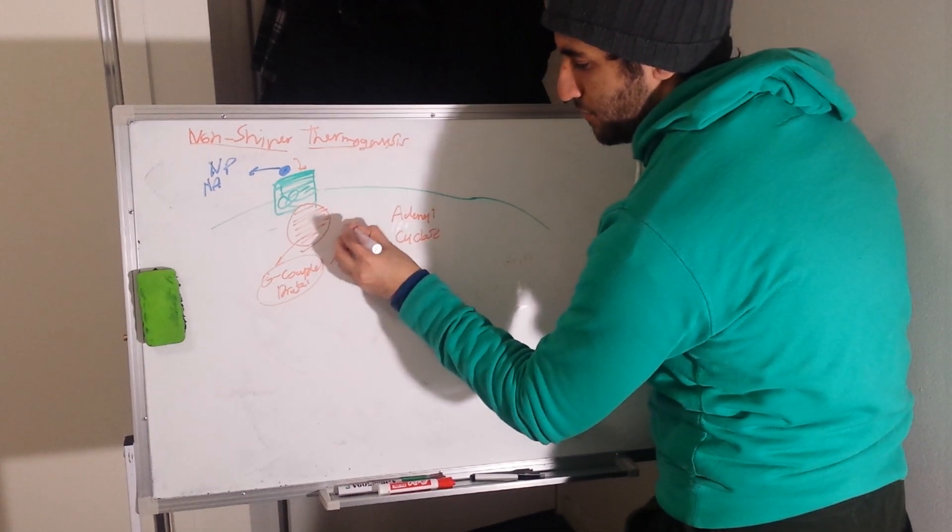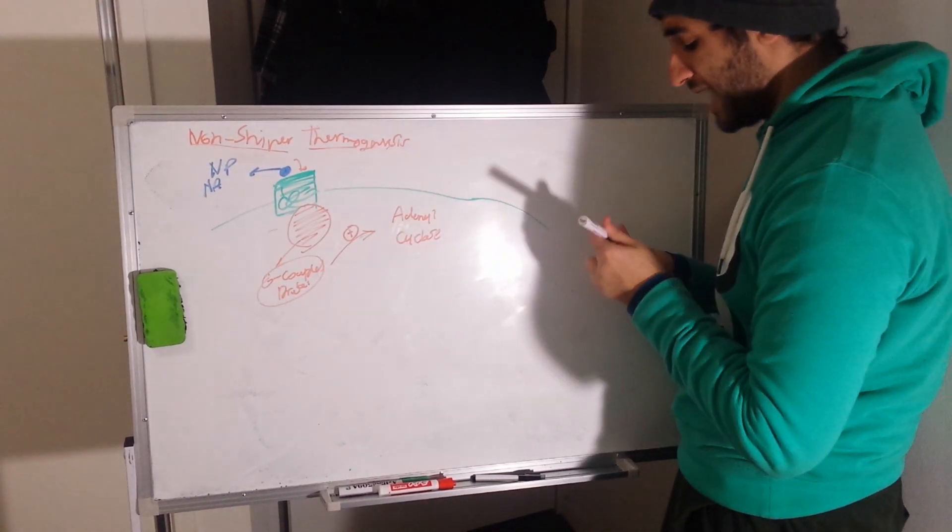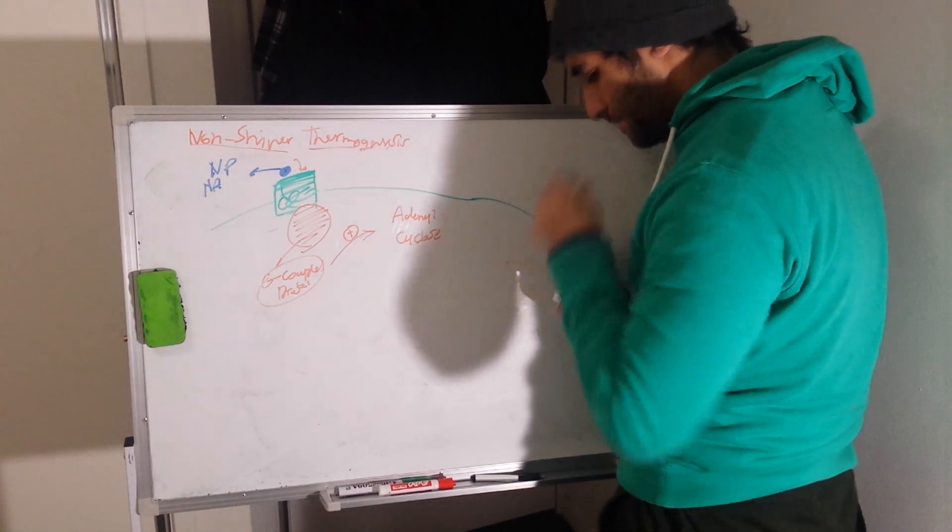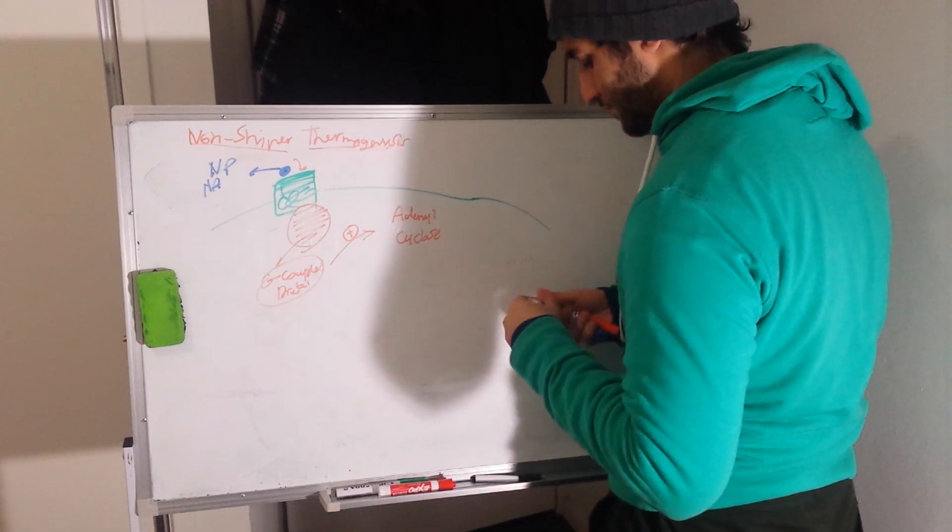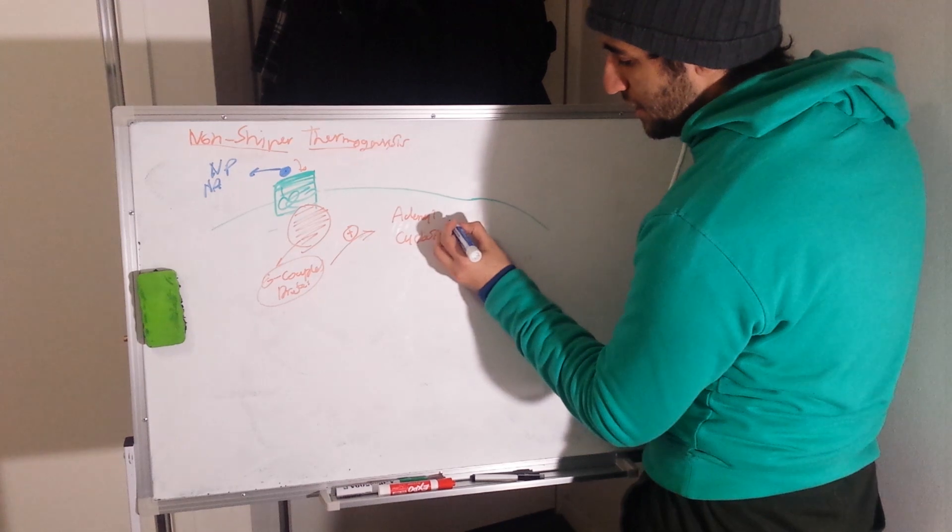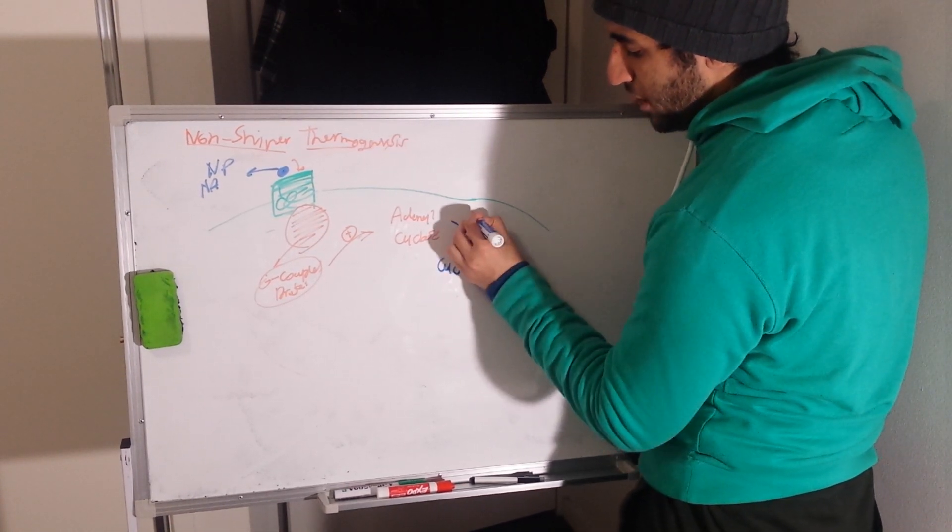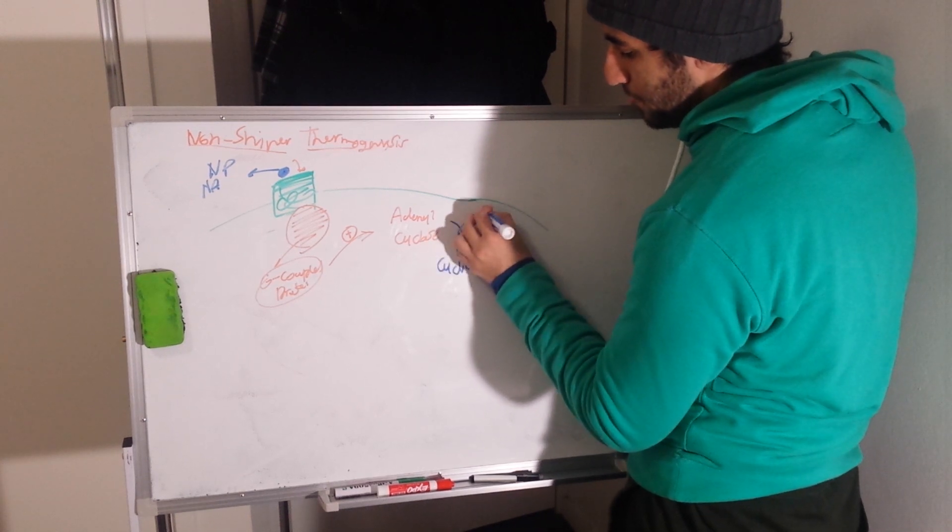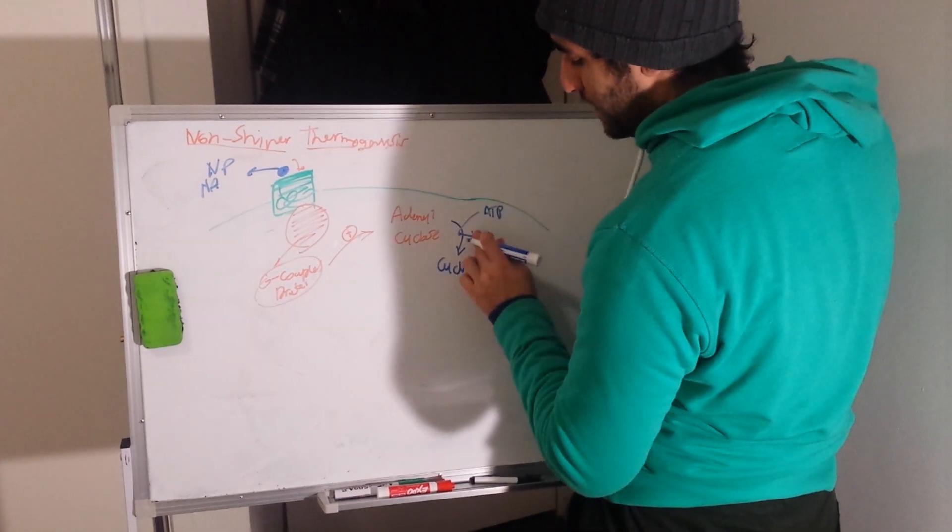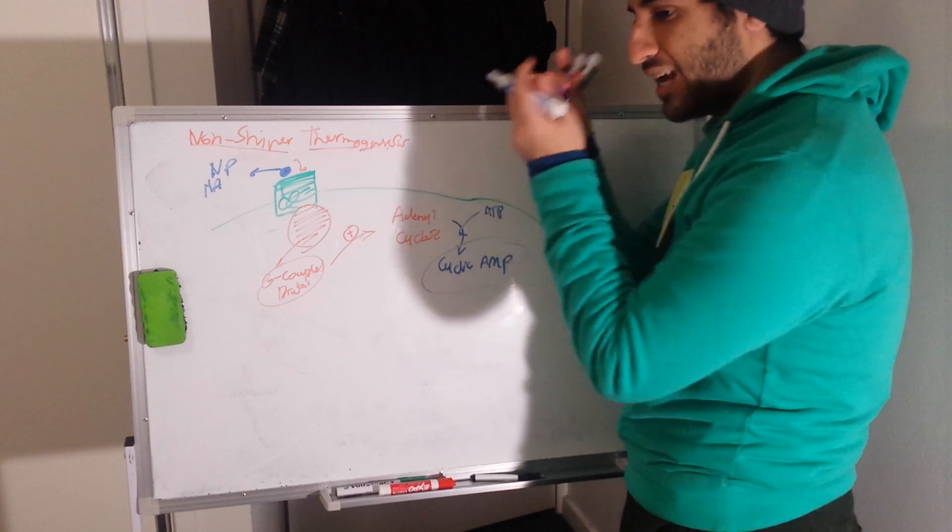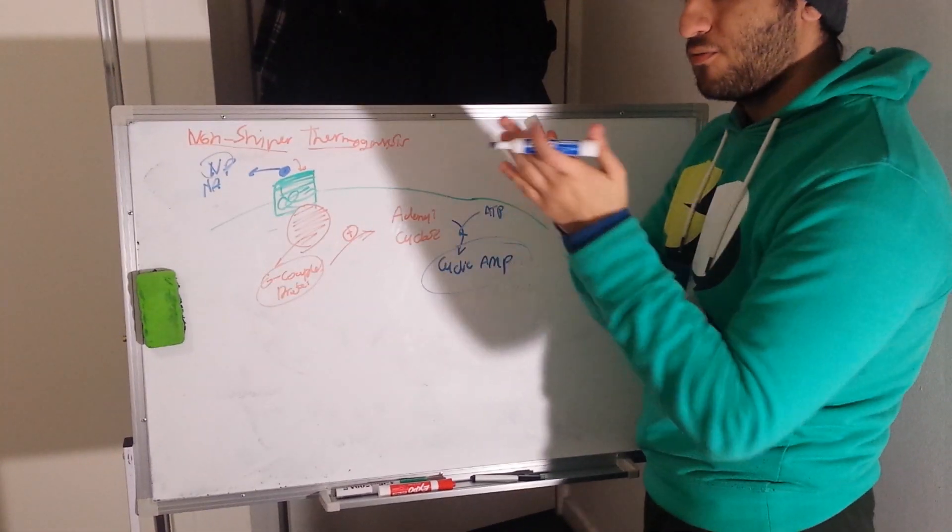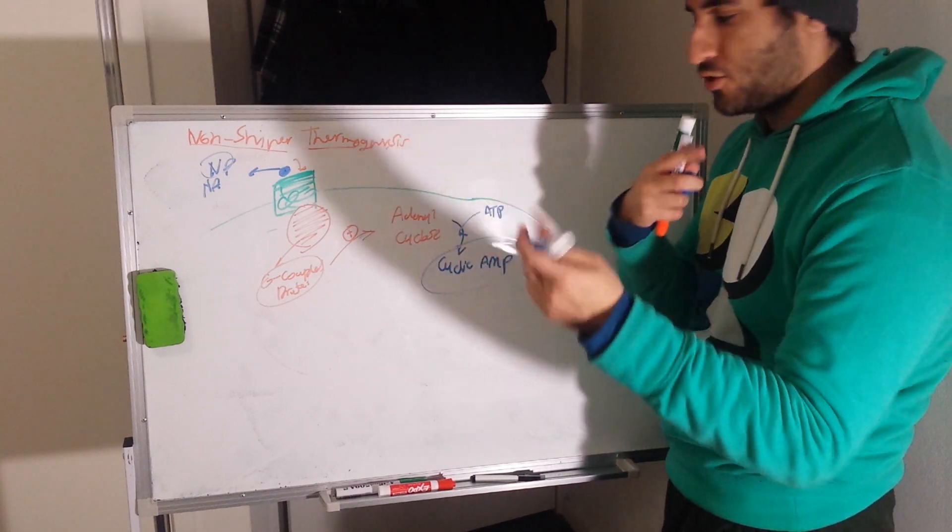So it stimulates the activation of adenylyl cyclase because adenylyl cyclase would then stimulate the activation of cyclic AMP from ATP. So ATP is being used to convert to cAMP. And we know cAMP is a secondary messenger that encodes the message from the norepinephrine from the hypothalamus to, in this case, phosphorylate the target protein.